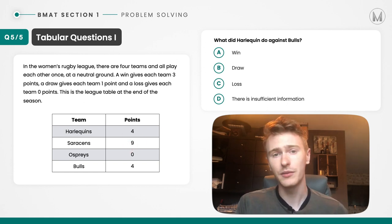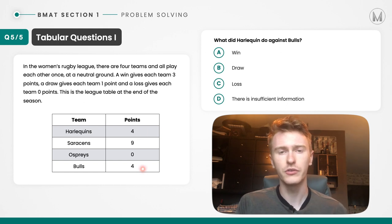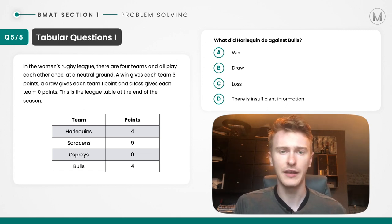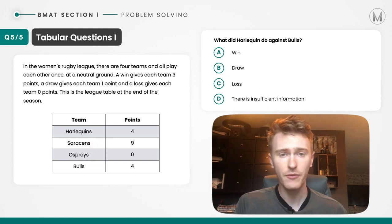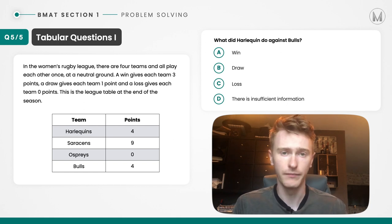Each of the remaining teams must have at least one loss. At the other extreme, the Ospreys earned zero points — they must have lost all their games. So the Harlequins and the Bulls must have both won against the Ospreys, giving them three points each so far. In reality they have four points, so both are missing one additional point. We know they lost against the Sarakens and won against the Ospreys — the only game they haven't played is against each other. Given they both received one point for that game, they must have drawn. So the answer is B.